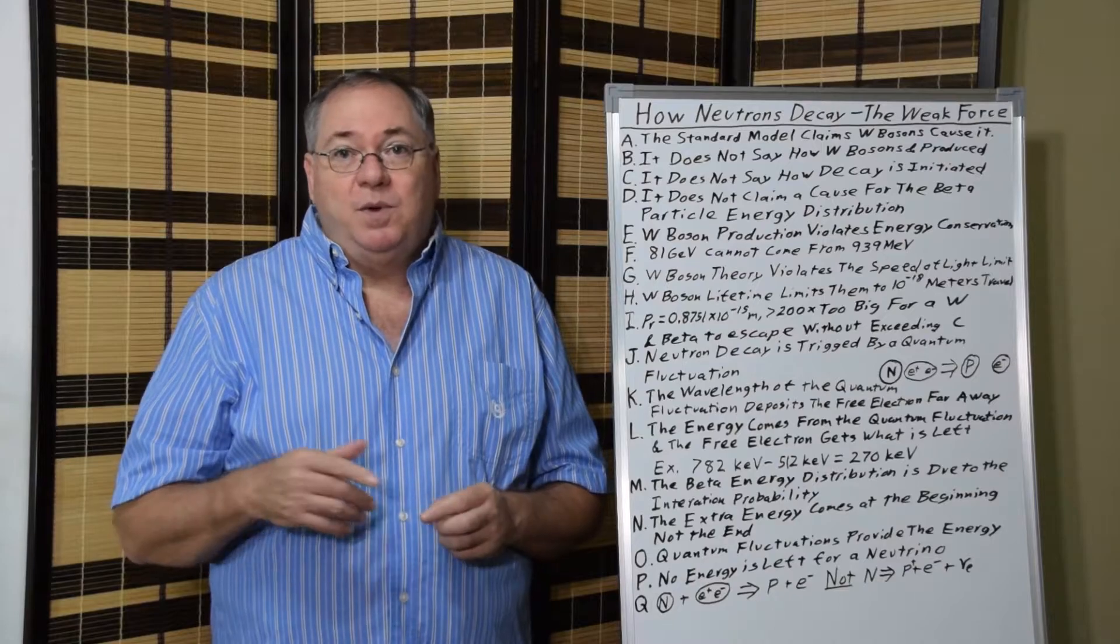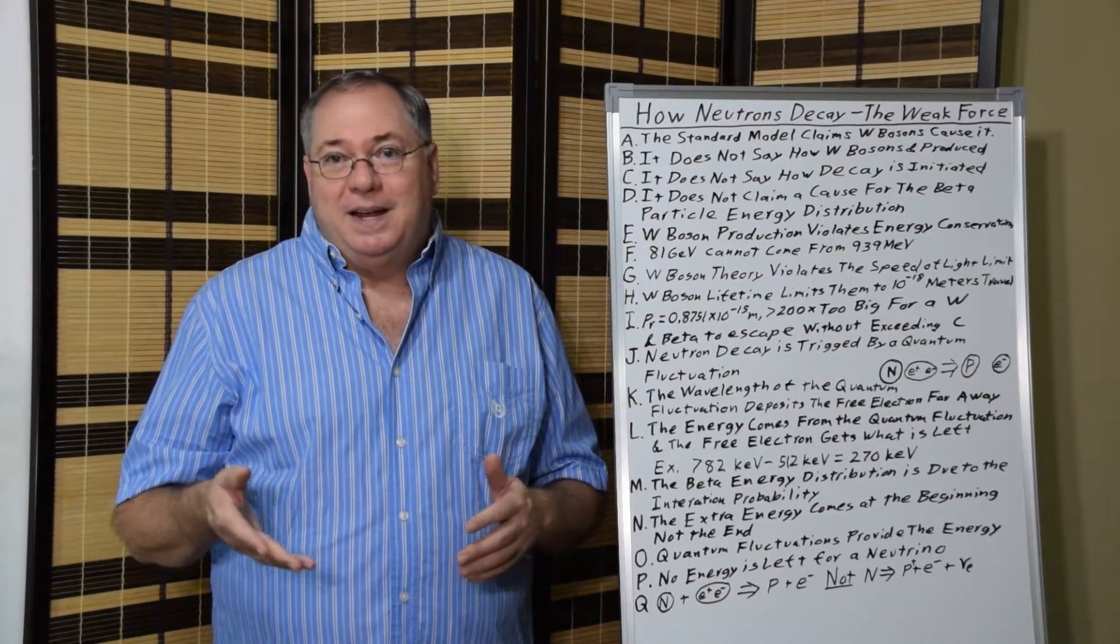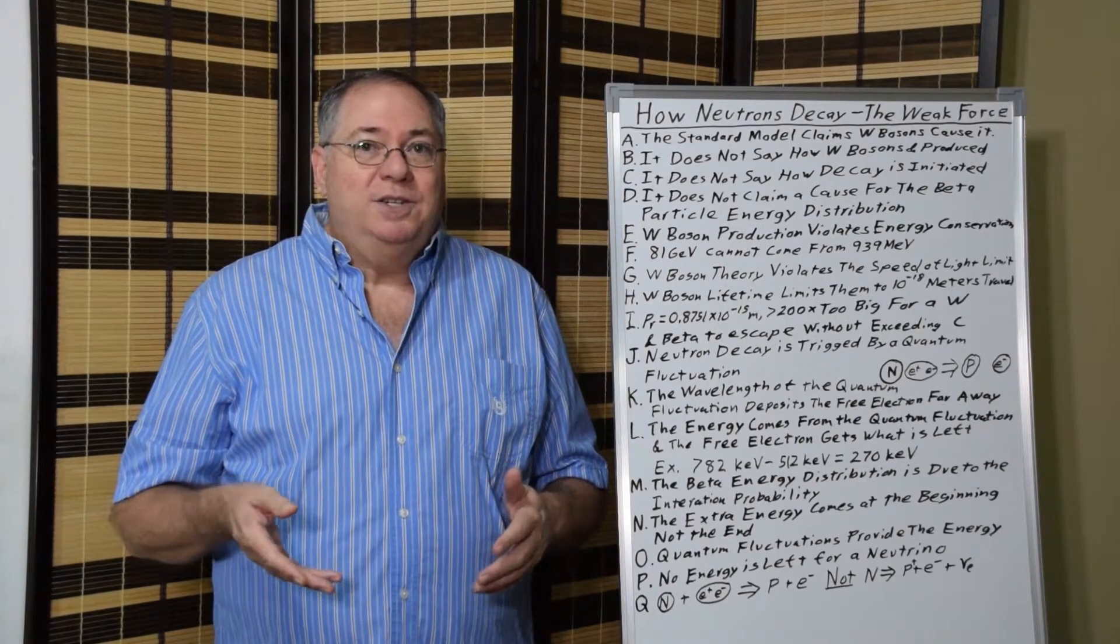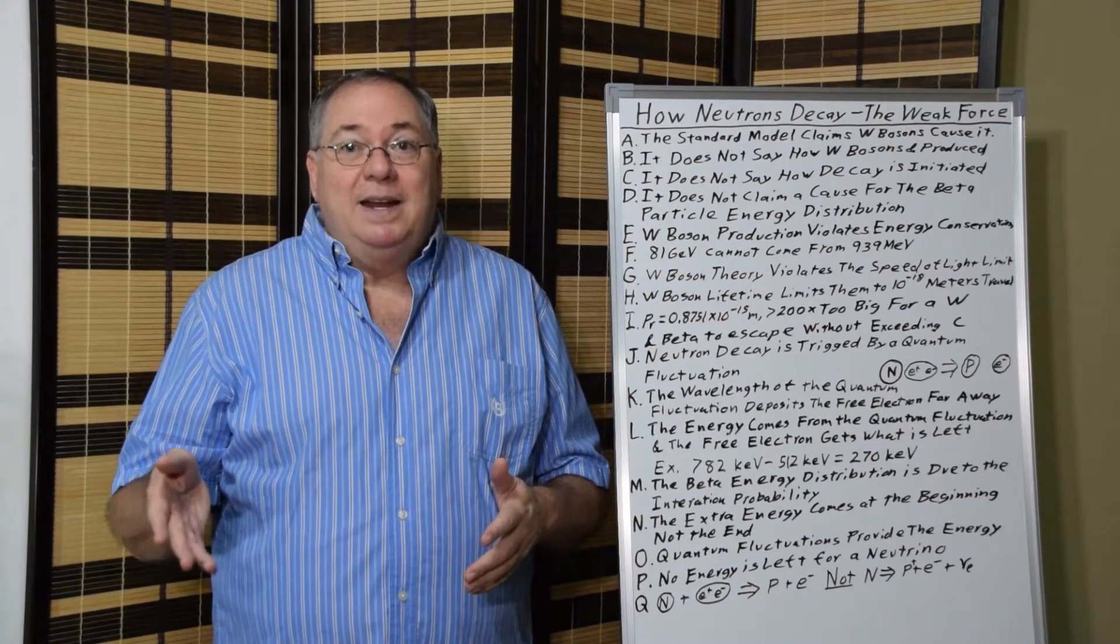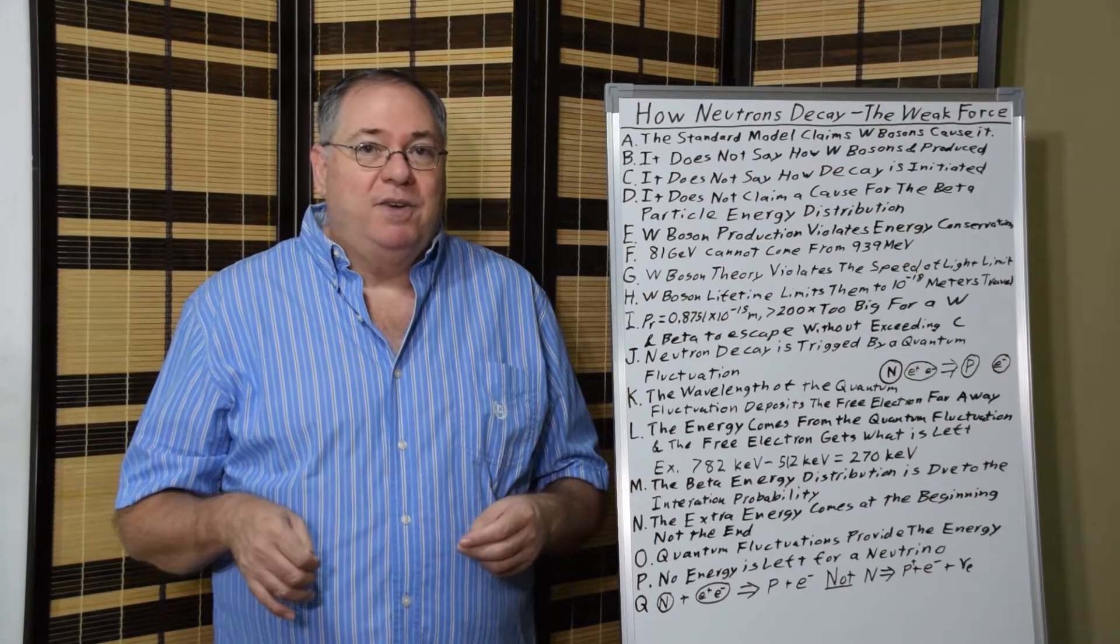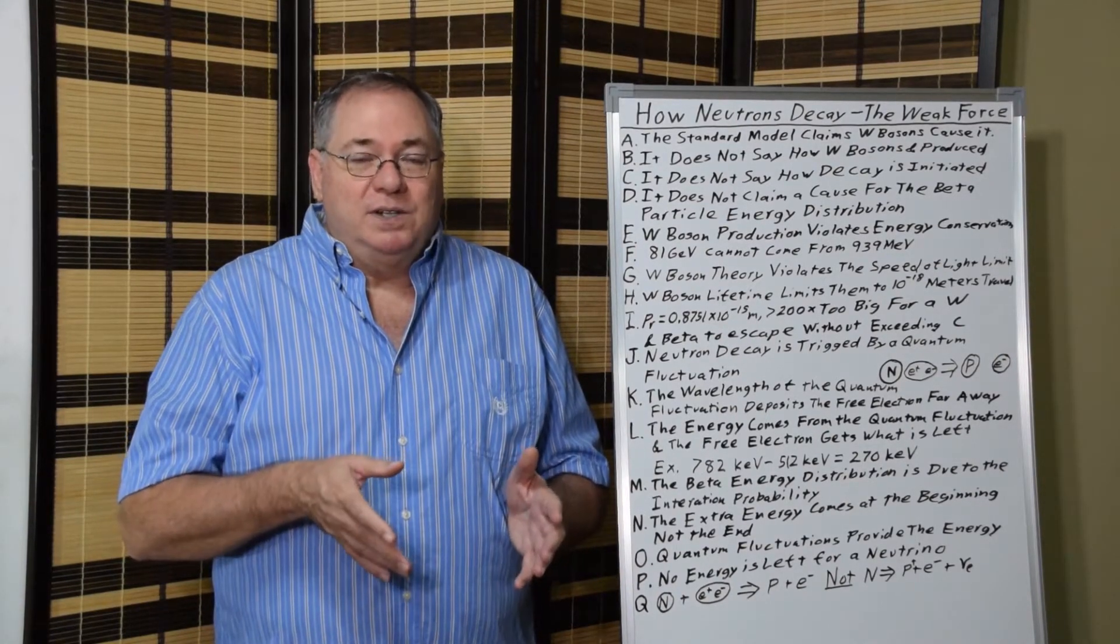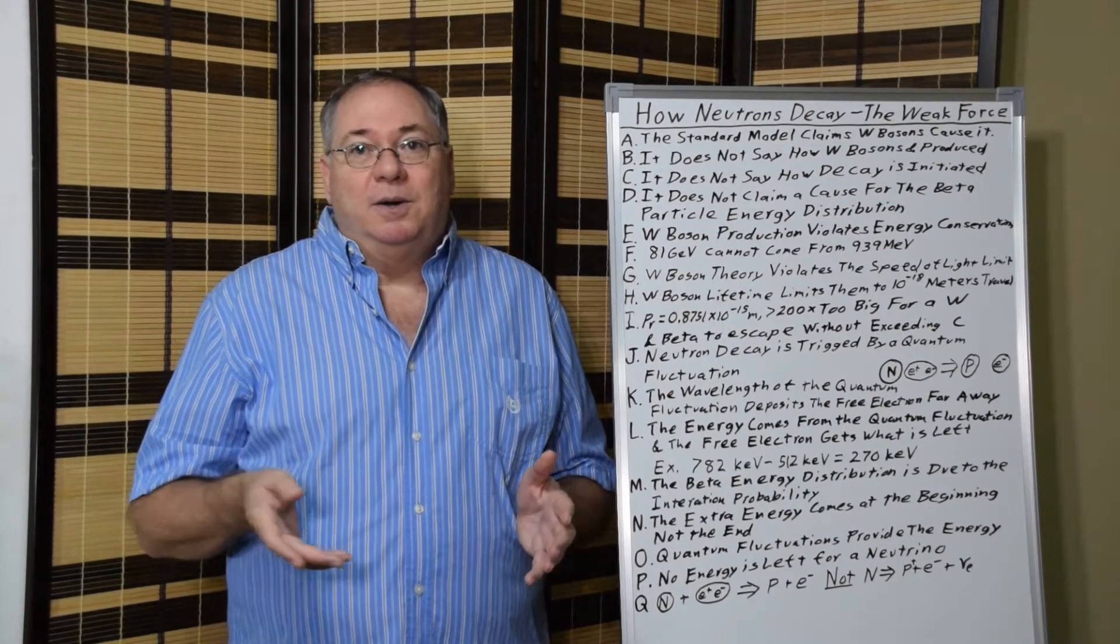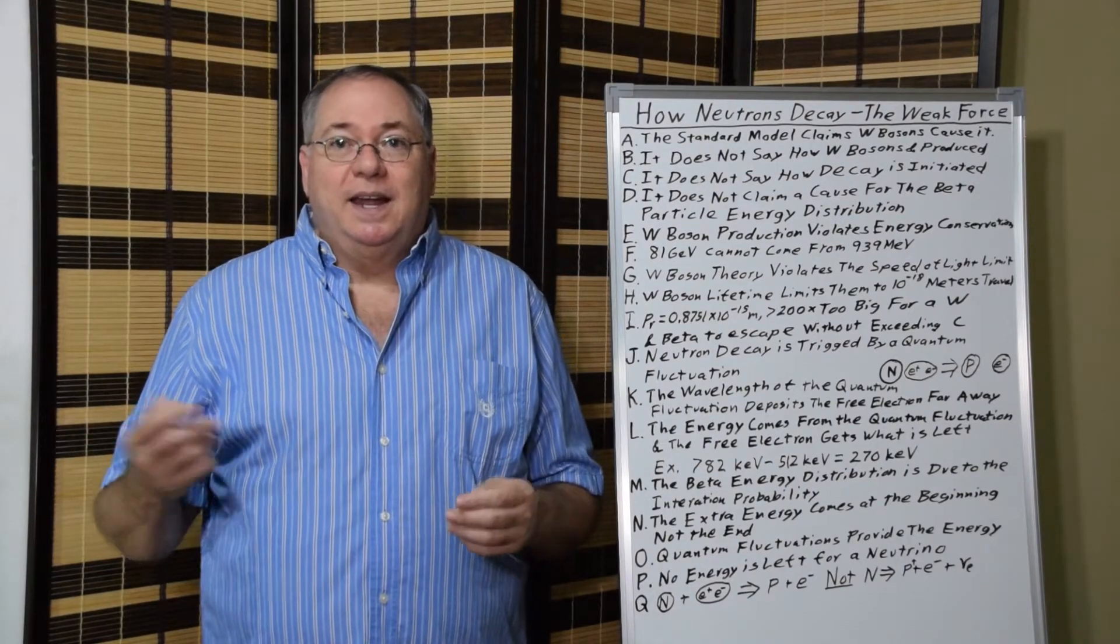And 512 is close to 511, which is the mass of the electron. So, conveniently, the energy distribution peak of the beta decay of these free electrons indicates that we have quantum fluctuations with the same energy as an electron that are principally interacting with the neutron to cause the decay in the first place.